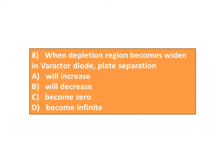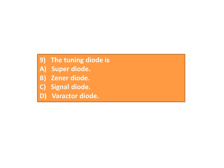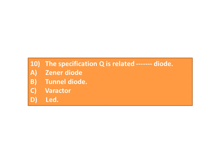Question 8: When the depletion region becomes wider in the Varactor Diode, plate separation ___. A. Will increase, B. Will decrease, C. Becomes zero, D. Becomes infinite. Question 9: The Tuning Diode is ___. A. Super Diode, B. Zener Diode, C. Signal Diode, D. Varactor Diode. Question 10: The specification Q is related to which diode? A. Zener Diode, B. Tunnel Diode, C. Varactor Diode, D. LED.